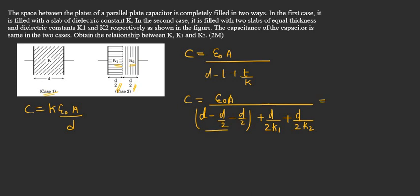This term will become 0. We can get epsilon 0 A divided by d by 2 is common. We can take outside. Then inside the bracket it will be 1 by k1 plus 1 by k2.